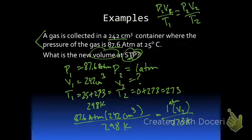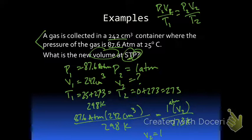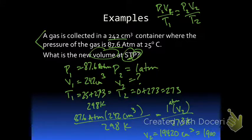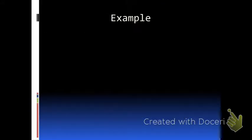Cross-multiplying and solving, the volume comes out to approximately 19,420 cubic centimeters. Rounding to the correct two significant figures, the answer is 19,000 cubic centimeters.